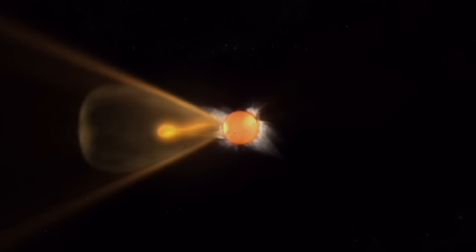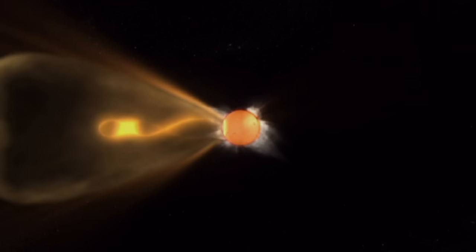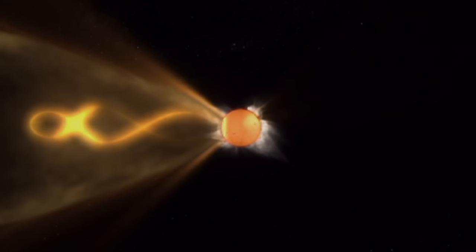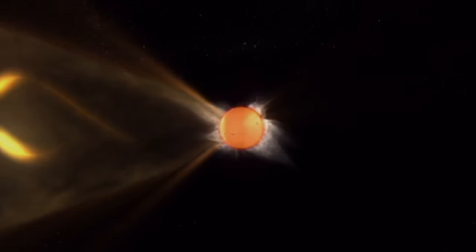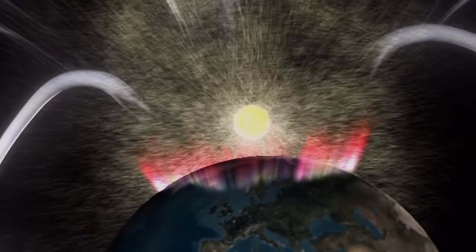Unlike a solar flare, a CME isn't a spray of radiation. It's a barrage. All of a sudden, this big addition of a hundred thousand times as much energy is thrown at the Earth. The CME creates immense electrical currents in the ionosphere. The upper atmosphere practically crackles with energy.